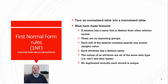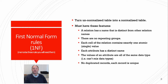The first step is to turn an unnormalized table into a normalized table. This will mean the table is going to be in first normal form. A table is called a relation in first normal form and must have the following features: a relation has a name distinct from other relation names; there are no repeating groups; each cell contains exactly one atomic or single value; each attribute has a distinct name; the values of an attribute are all of the same data type; and no duplicated records — each record is unique.